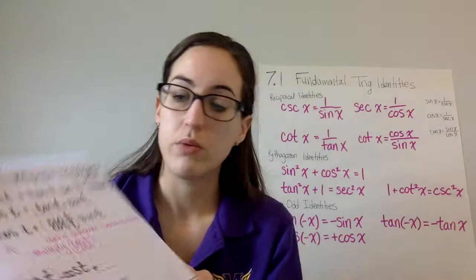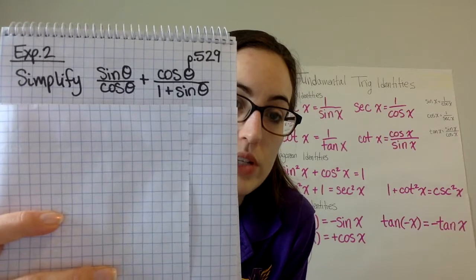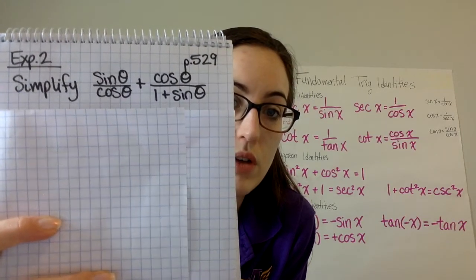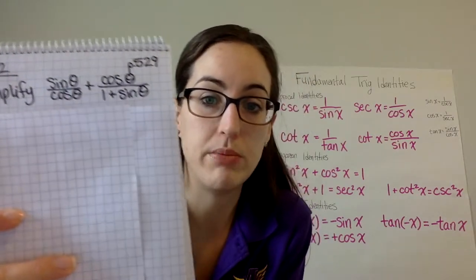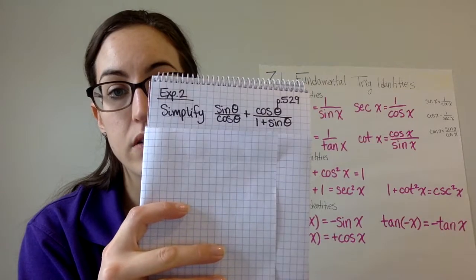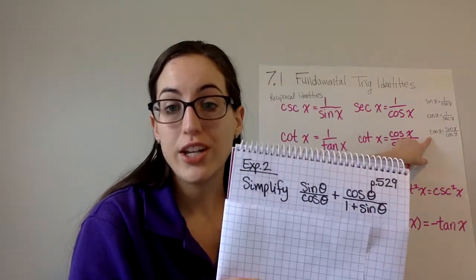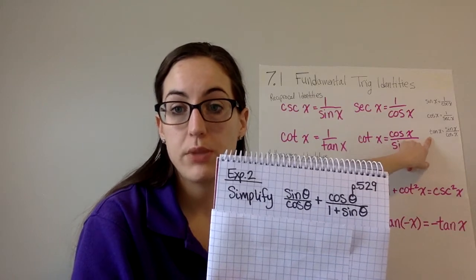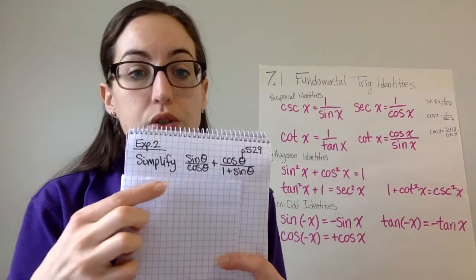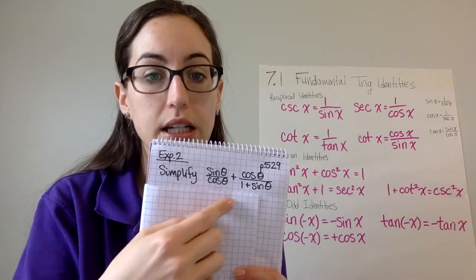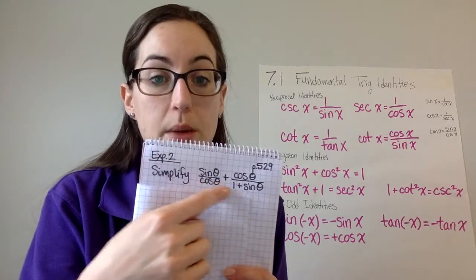Our second example, we're going to do also on page 529 out of your book. We're going to simplify sine theta over cosine theta plus cosine theta over 1 plus sine theta. In a real example, this would probably be given to you as tangent as your first term. You can see that very clearly, the first term is equal to tangent. We're not going to change it to tangent. The reason I'm not going to jump to changing that to tangent, that would be like starting down the wrong path. You just back up and start over. You'll soon find out that you can't go any farther, and we really need common denominators is what we need. Don't jump to replacing that with tangent.